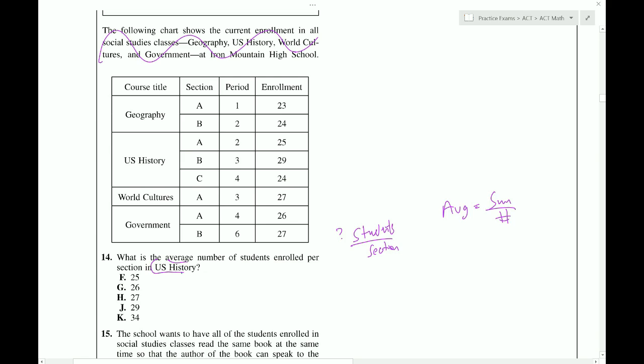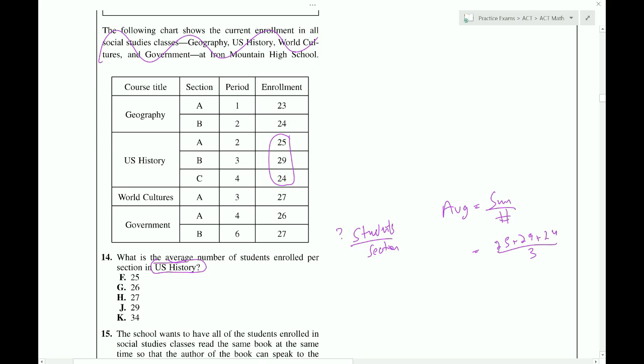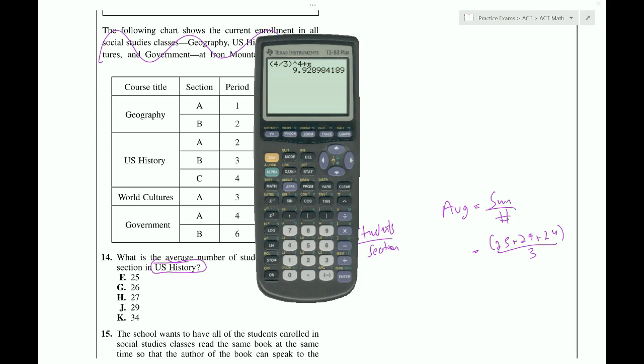Looks like we're going to have to add up all the students and then divide by the number of sections. We're talking about U.S. history here. So, U.S. history is these number of students. So, we can put the sum in. 25 plus 29 plus 24. Divide that by the three sections. One thing to keep in mind is that whenever you have multiple terms on a numerator, like this, you need parentheses around it. Otherwise, the calculator will not give you the correct answer.